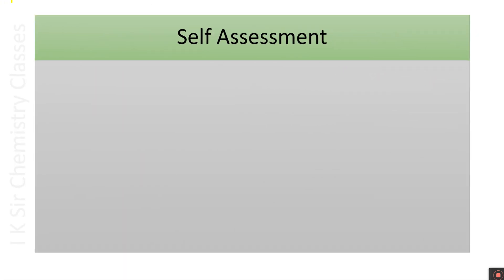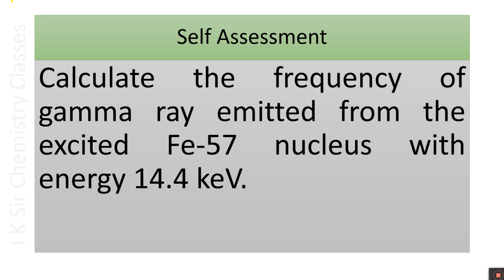Self-assessment: a question will appear before you — try to solve it by pausing the video within 3 minutes. Calculate the frequency of gamma ray emitted from the excited Fe-57 nucleus with energy 14.4 kilo electron volts. The excited Fe-57 nucleus having energy 14.4 keV emits gamma radiation and comes back to the ground state — calculate the frequency of that gamma radiation.